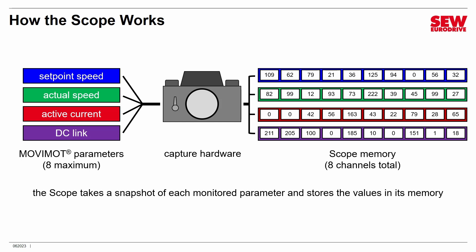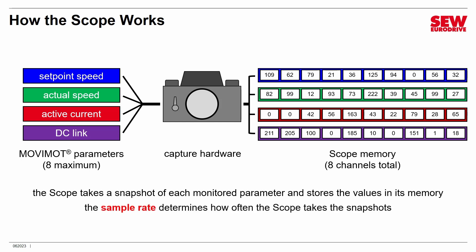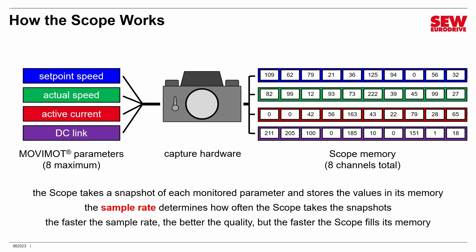The rate at which the scope takes those snapshots is called the sample rate. It determines how often the scope is taking snapshots and dumping them into memory. The faster the sample rate, the better the quality representation of the parameters. But the memory is relatively small, so the faster the sample rate, the faster you fill up the memory. Setting the sample rate is something of an art where you strike a compromise between quality and length.